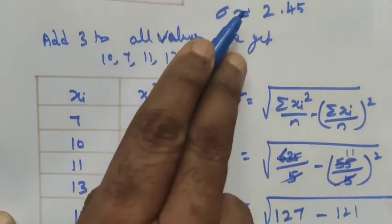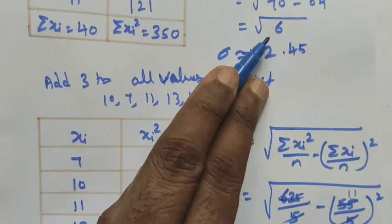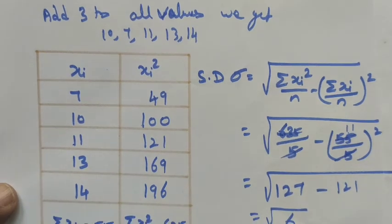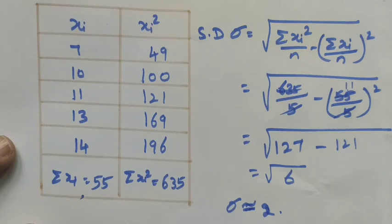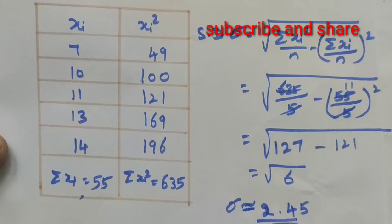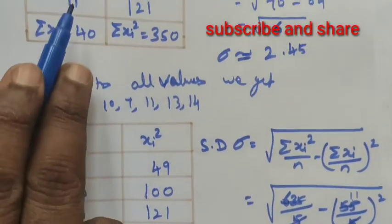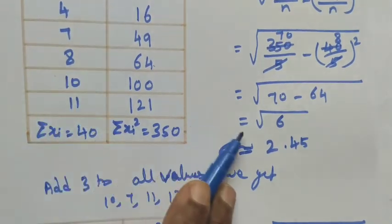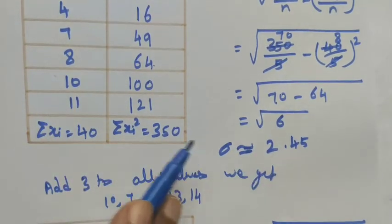Applying the standard deviation formula to the new data: Σxi² / n = 635/5 = 127, and Σxi/n = (7+10+11+13+14)/5 = 55/5 = 11, so 11² = 121. Therefore 127 minus 121 = 6, and sigma equals root 6. So we get the same value, sigma equals approximately 2.45.